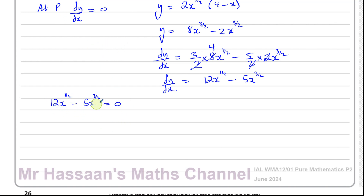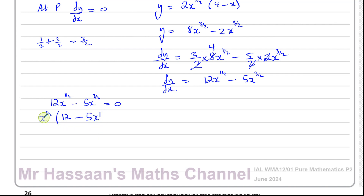So the lowest power here is x to the power of a half, which is the common factor. Factorizing: x to the half times 12 gives 12x to the half. For the second term, x to the half times 5x to the power of 1 gives 5x to the 3 over 2, because you add the powers: a half plus 1 equals 3 over 2. So we get x to the power of a half times (12 minus 5x) equals 0.